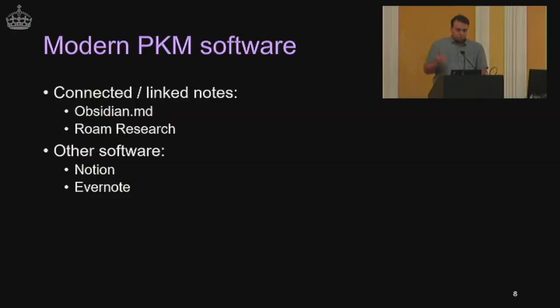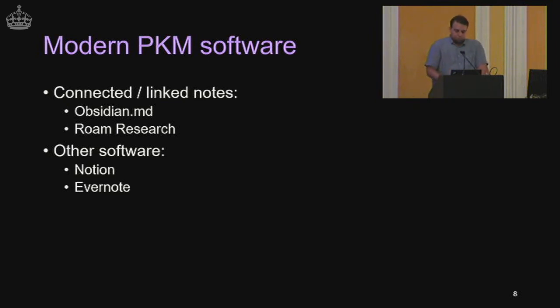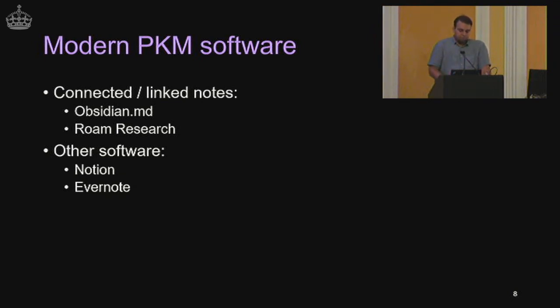So let's have a look at that software. The focus for the rest of this talk is going to be on connected notes. The main software options for that are Obsidian MD and Rome Research. I personally use Obsidian. Both have only gained traction in the last two to three years, so connected notes are fairly new. It's also worth mentioning that some SaaS solutions can be used for PKM. Notion is an example — people use it in teams for project management and note-taking. In the extra material, I've included a blog post giving an example of how Notion can be used for PKM.